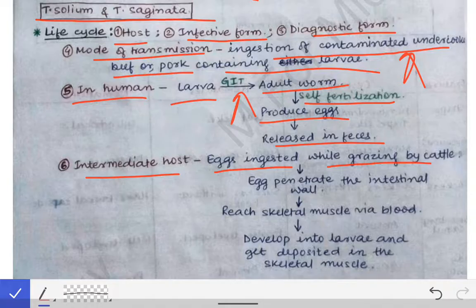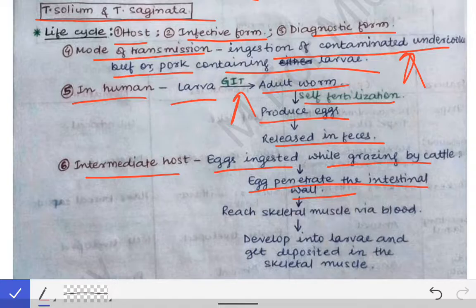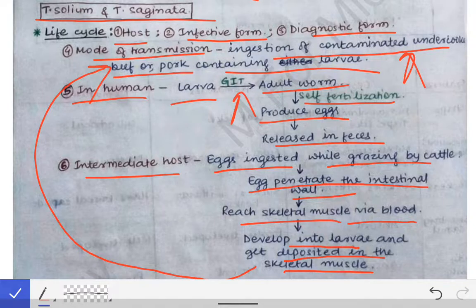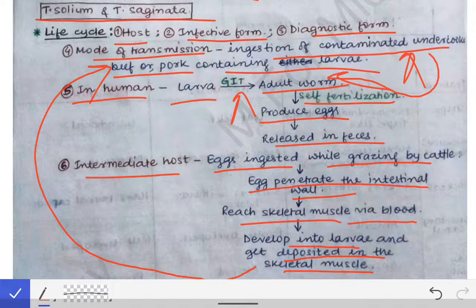Those eggs are ingested by the cattle or pigs, and then these eggs penetrate the intestinal wall, reaching the skeletal muscle via the blood. In the skeletal muscle they develop into larva and get deposited there. When humans undercook the flesh or muscles of these cattle or pigs, the larva again enters the human body and the whole cycle continues.